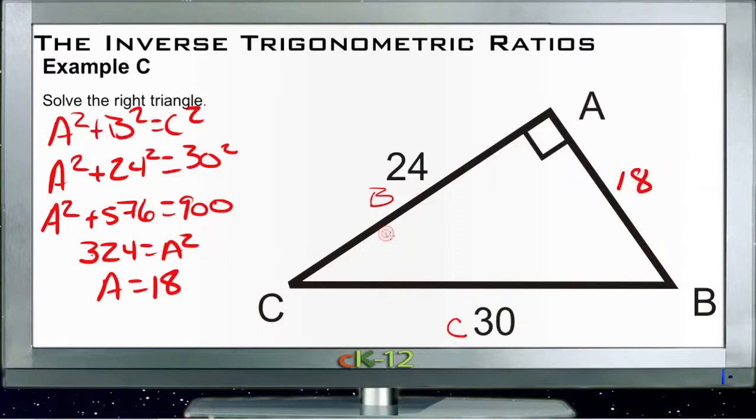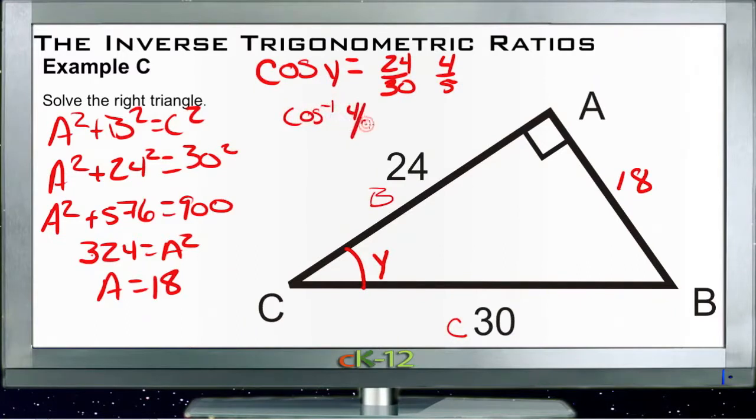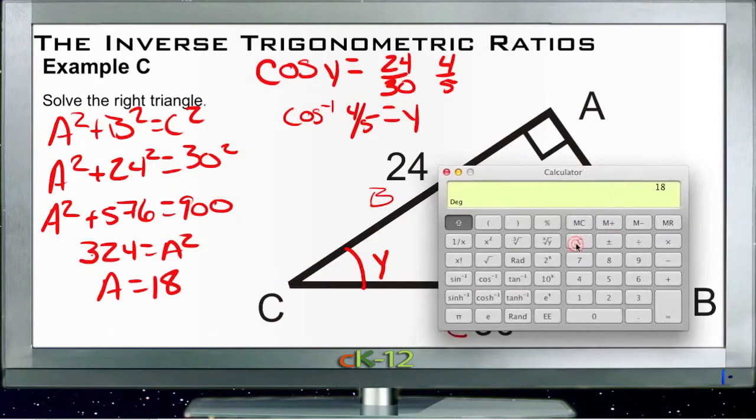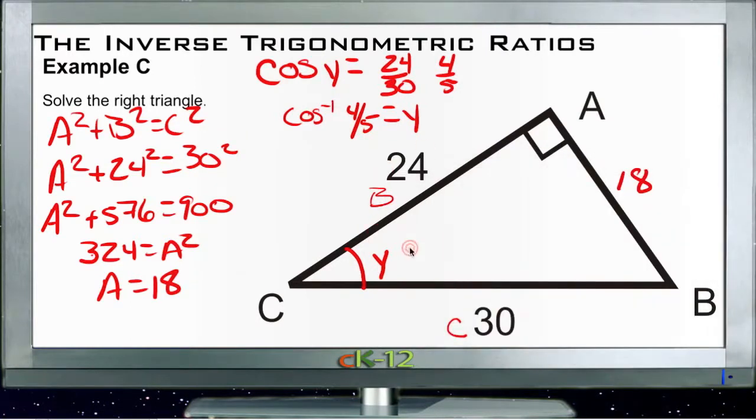Now to find our missing angles, we'll use sine, cosine, tangent ratios. We're looking for angle C, so let's use adjacent and hypotenuse, which would be cosine. Cosine of the angle is 24 over 30, which reduces to 4/5. The inverse cosine of 4/5 is 0.8, which gives us 37 degrees.